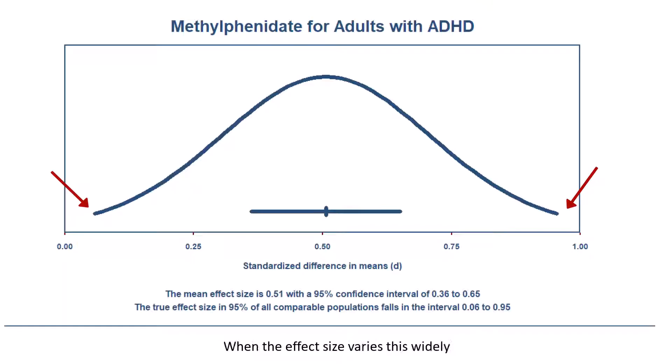When the effect size varies this widely, it would be helpful to identify factors that are associated with the magnitude of the effect. We can do that using subgroup analysis or meta regression.